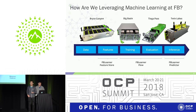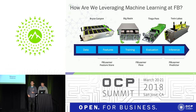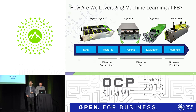FB Learner Flow builds, trains, and evaluates our machine learning models based on those features. After the model is fully trained with satisfying accuracy, we deploy it into our FB Learner Predictor. FB Learner Predictor then performs inference or prediction based on new data that comes in — for example, making a personalized recommendation on the posts or comments that a user would like to see most.